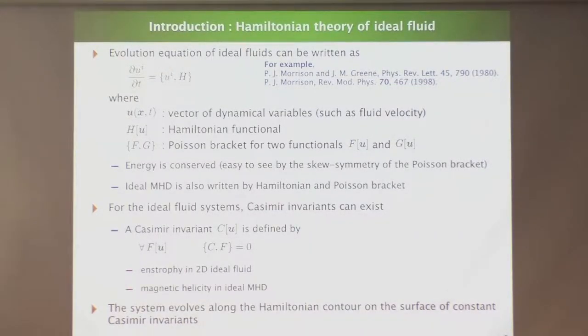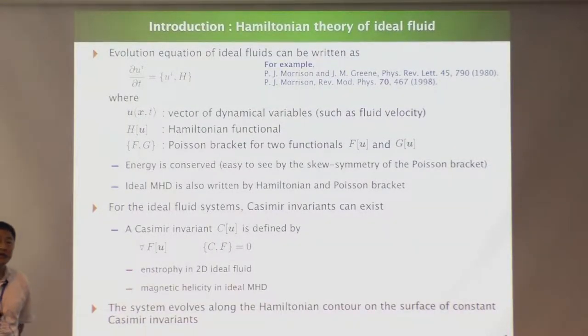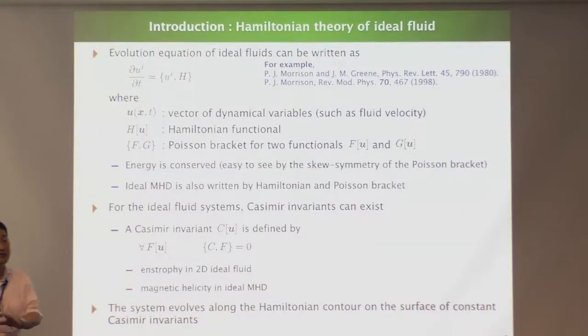Because of the existence of this Casimir invariant, the stationary states have a rich structure — not trivial stationary states. Examples are enstrophy in 2D ideal fluid or magnetic helicity in ideal MHD.